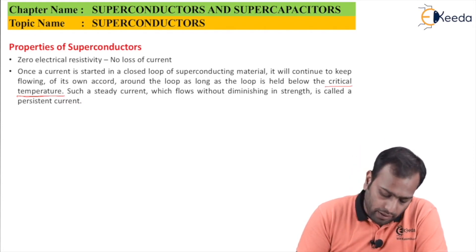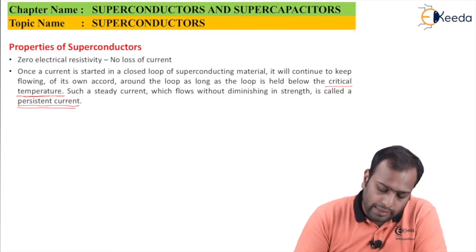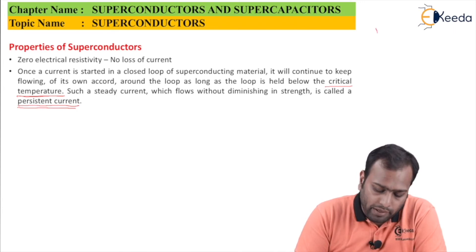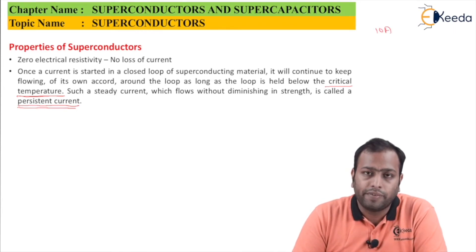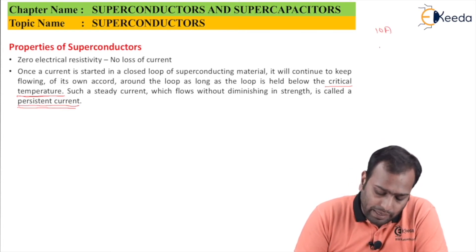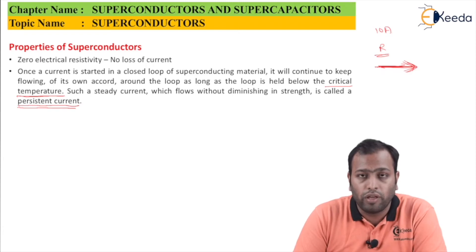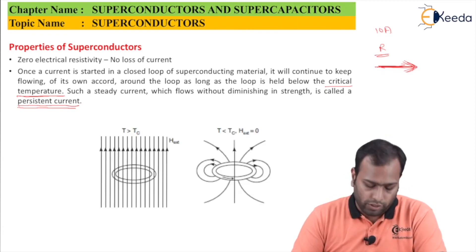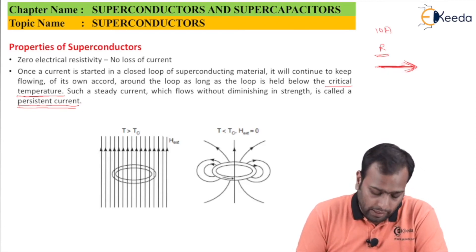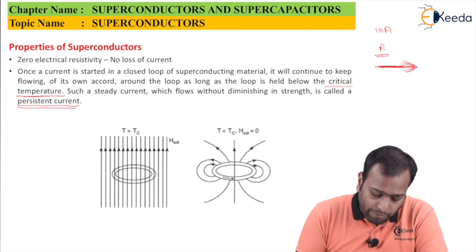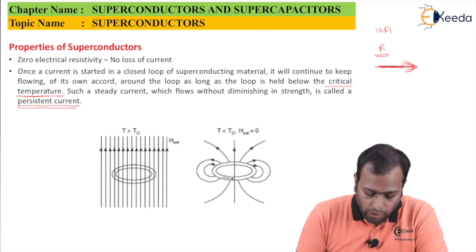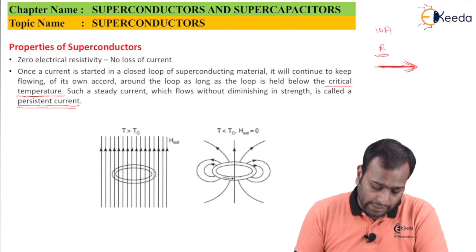For example, suppose 10 amperes is flowing in a material. As temperature decreases, resistivity decreases, and at temperature equal to Tc the resistance becomes constant — and a constant amount of current begins flowing on its own. This is the persistent current. The pictorial representation shows that for temperature greater than or equal to Tc with an external field, the current behaves normally, but for temperature less than Tc with no external field, a consistent current flows inside the loop.